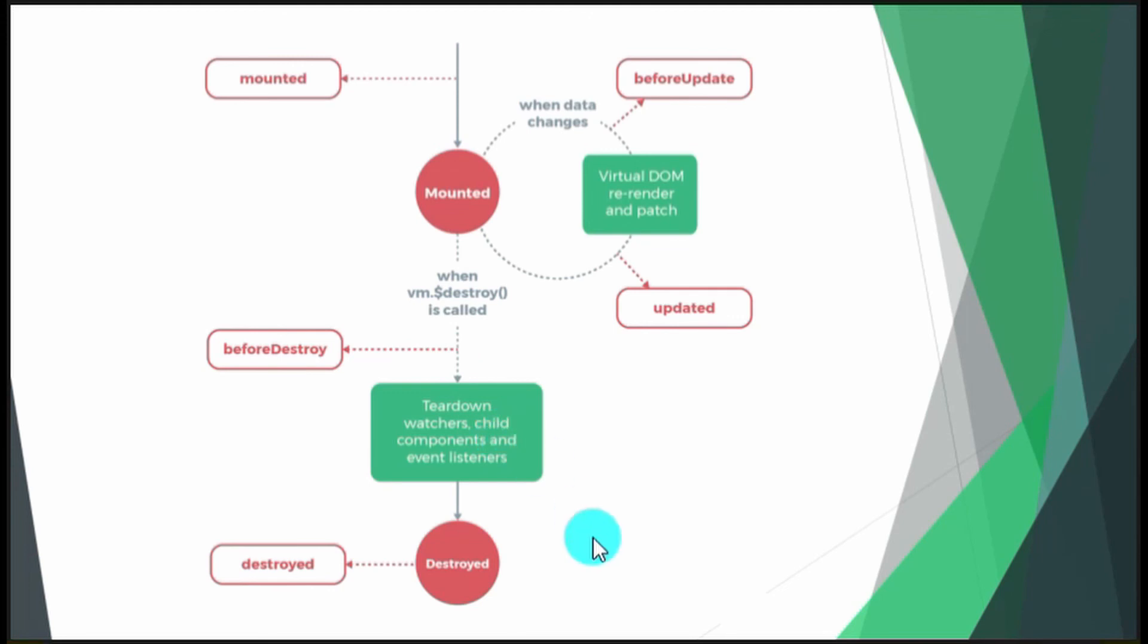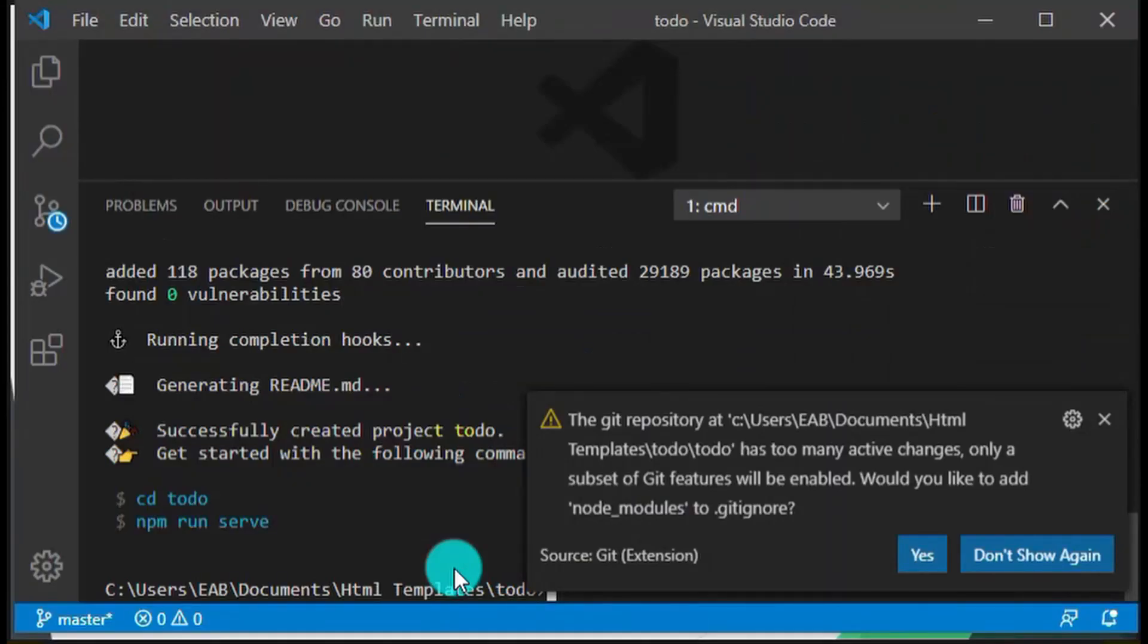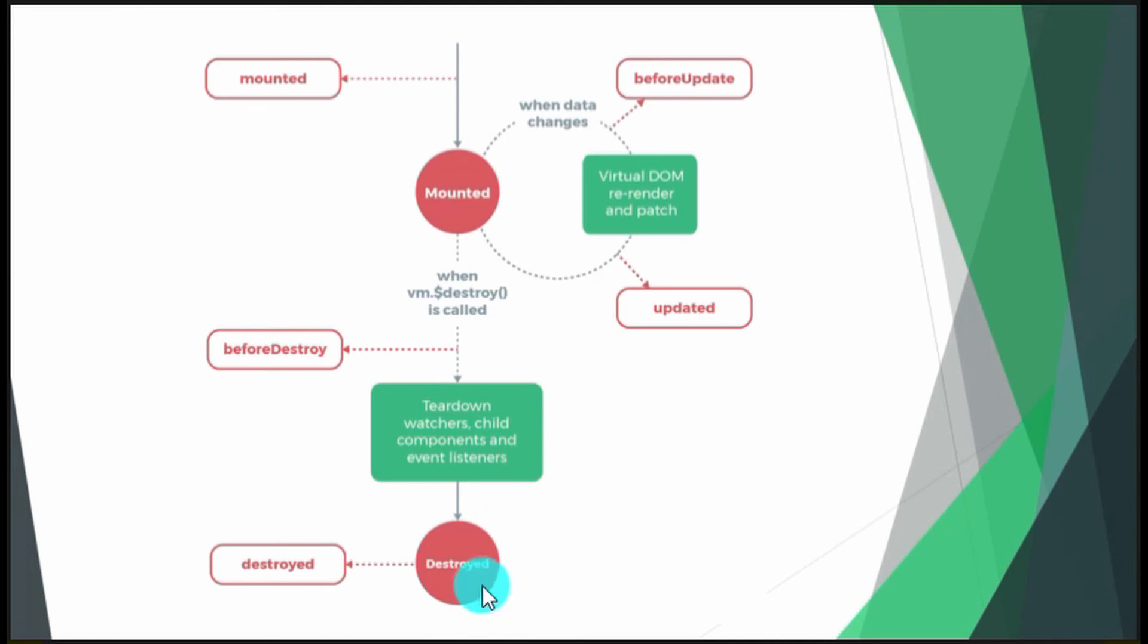Then what happens is the view is torn down: watchers, child components, and event listeners. Then it is destroyed. When it's finally destroyed, you have another lifecycle hook, which is destroyed. Don't worry, this may look a bit new to you, but it's very simple. Once we start coding, you'll be able to understand.